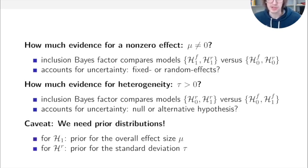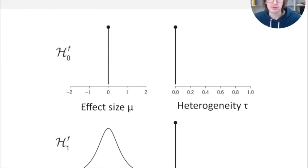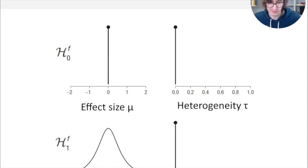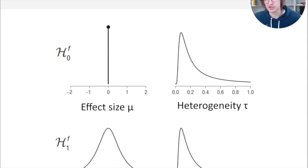This only works in a Bayesian framework if you assume prior distributions — specifically, assumptions about what size of effect and how much heterogeneity you expect. For fixed effects models, the null model places a point mass on zero effect and the alternative assumes the effect is likely between minus two and two, with higher probabilities for smaller effect sizes. The random effects models add a prior distribution on heterogeneity tau, with a default prior based on a literature review.